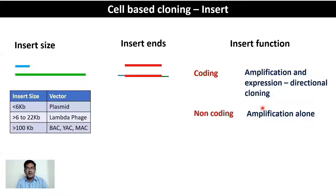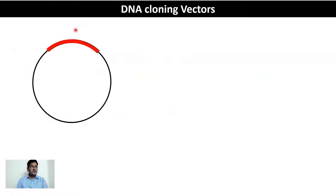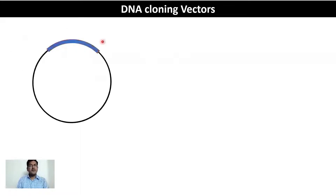Despite the variation in inserts, there are certain basic properties common to all vectors. Here is a typical vector — the red portion represents the insert or DNA you want to amplify and/or express, and the black circle represents the remaining part of the vector. You could have another insert of the same size but very different composition, or one that is smaller or larger in size.